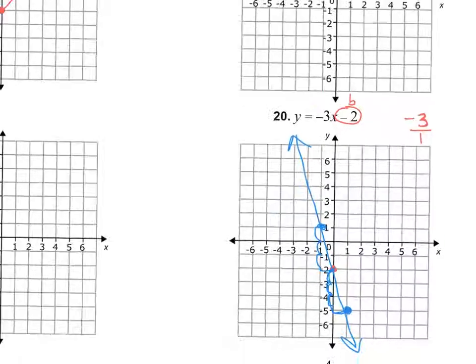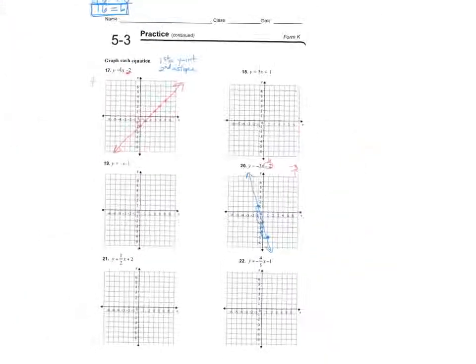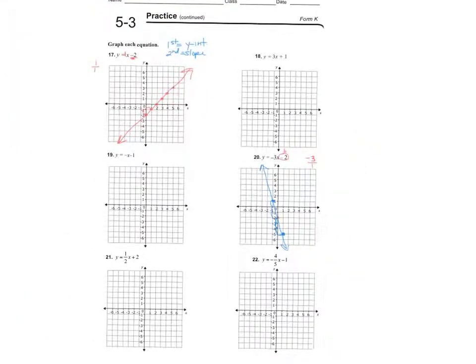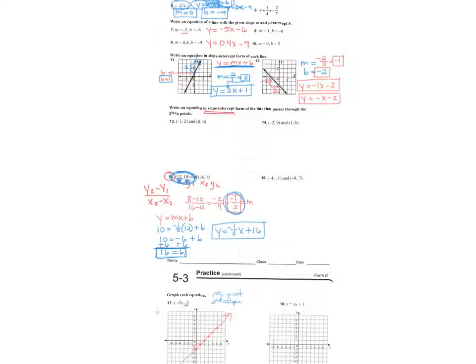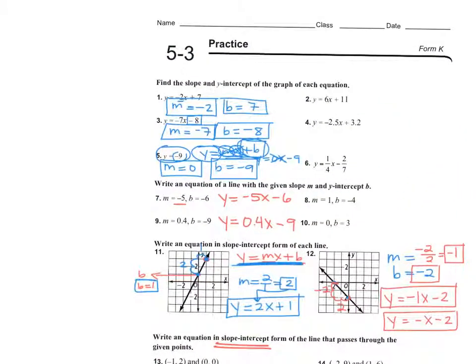Questions on that? Your homework is finish those four graphs, finish those three problems, and finish these guys up here. And I think there was one on that first page if you didn't find that slope on 5-1. So finish the worksheet. Bye-bye.